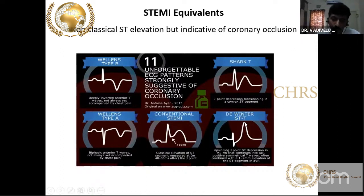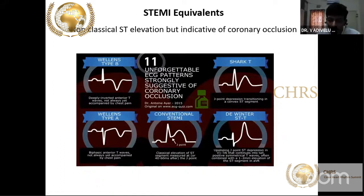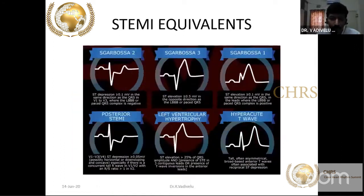The De Winter sign also has a characteristic ECG pattern — J point depression with a hyperacute tall T wave. De Winter described this in 2008 as an anterior wall MI equivalent. All of these are very classical STEMI equivalents we should not miss. Sometimes new onset left bundle branch block can also present as an anterior wall MI equivalent.